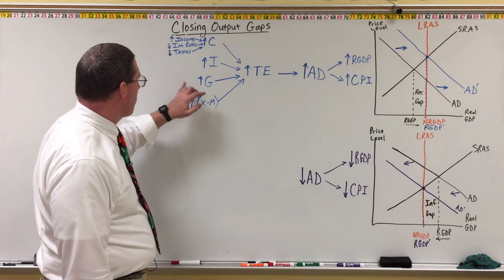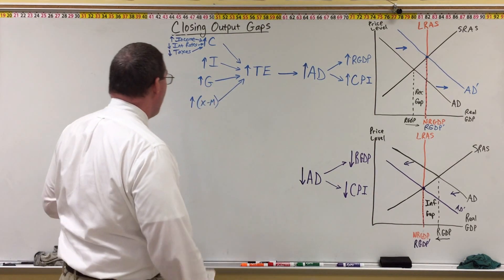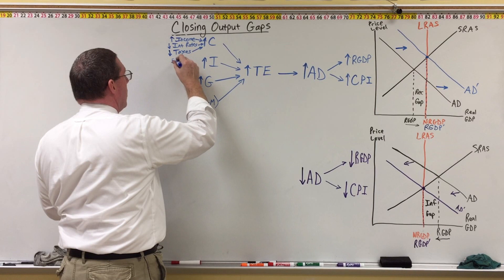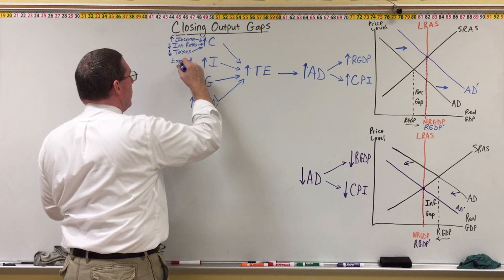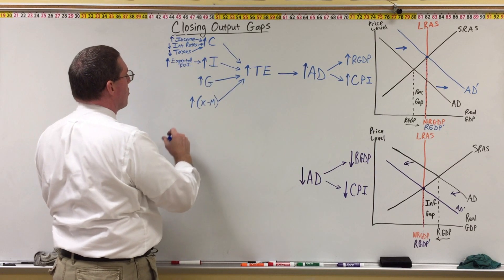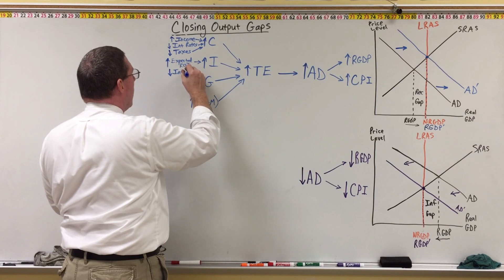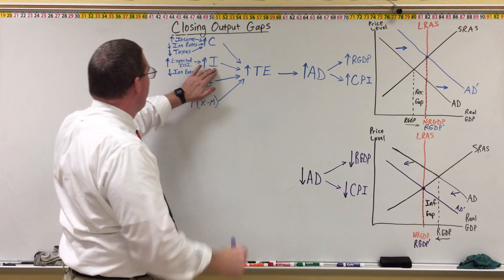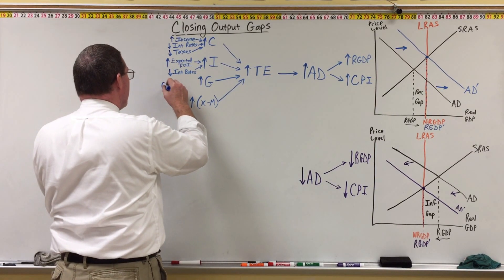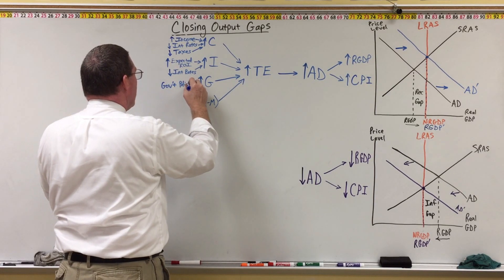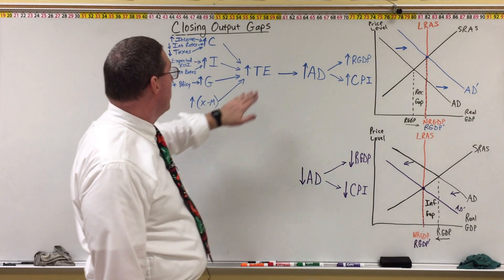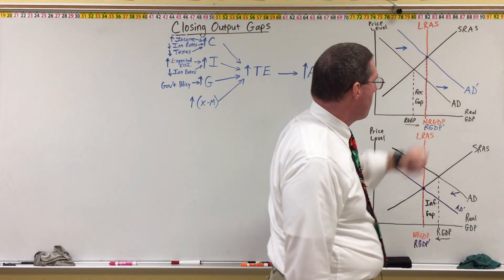Investment is primarily affected by expected return on investment (expected ROI) and interest rates. When the return on investment is higher or interest rates are lower, businesses buy more. Government spending is determined by government policy — whatever Congress decides. If Congress decides to spend more money, government spending goes up, total expenditure goes up, closing the recessionary gap and bringing us back into long-run equilibrium.